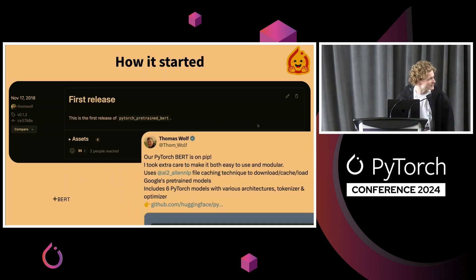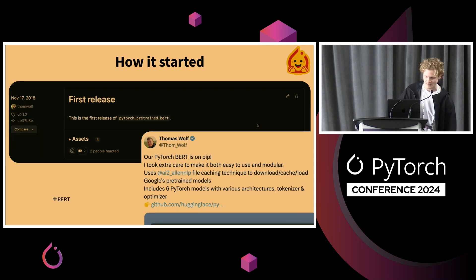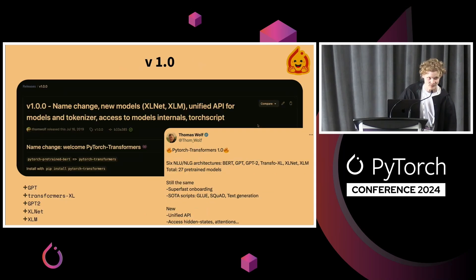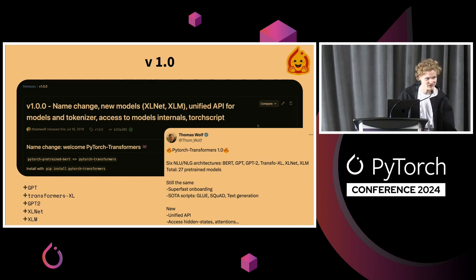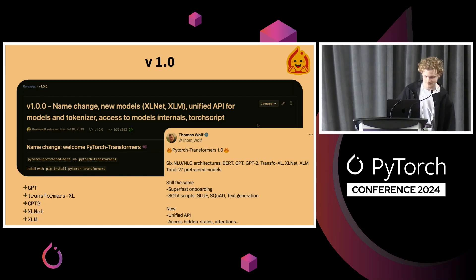The first release was mostly for BERT — the BERT model was supported and that was back in 2018. Then with the arrival of the first release, we renamed the library to PyTorch Transformers, so still very much PyTorch-centric, and we saw the arrival of five new models — a small growth, but still a growth.